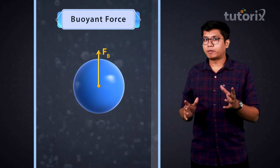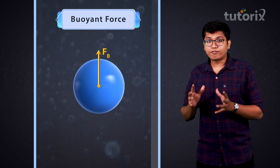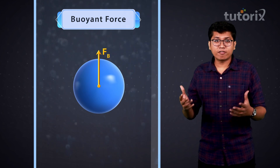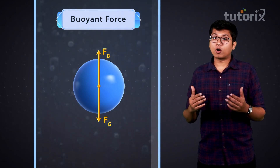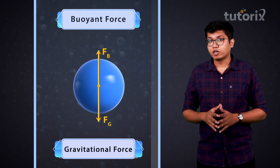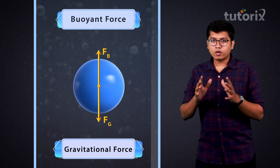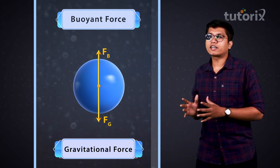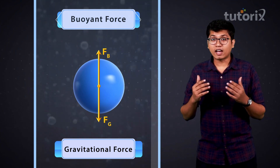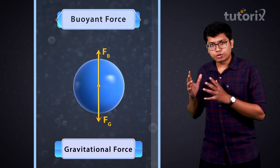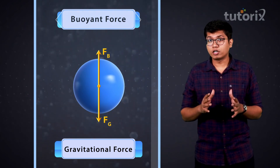If you think about it, this isn't the only force acting on the body. Because if you have any object placed anywhere on the earth's surface, it's going to be attracted downwards because of the gravitational force. So this object too would be attracted downwards. Now the buoyant force and the gravitational force seem to be in opposite directions. So which way the object is going to move depends on which of these is stronger.